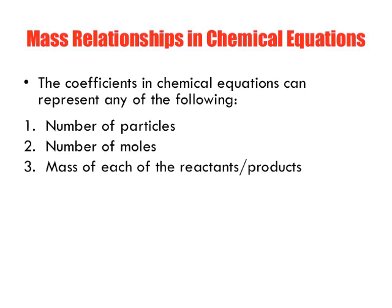Mass relationships in chemical equations. The coefficients in a chemical equation can represent any of the following: number of particles, as we did at the beginning, that's what we already know; the number of moles, which we just discovered; and the mass of each reactant and product.